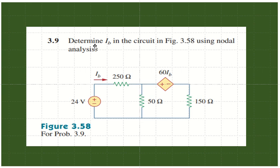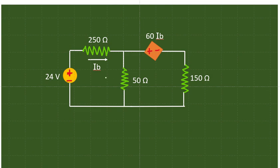Now we are going to solve problem 3.9 from Fundamentals of Electric Circuits by Alexander and Sadiku, fifth edition. This question is to determine Ib using nodal analysis. When we look into this problem, we come to know that three resistors are there.